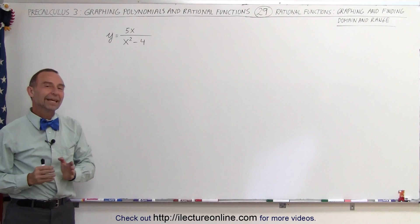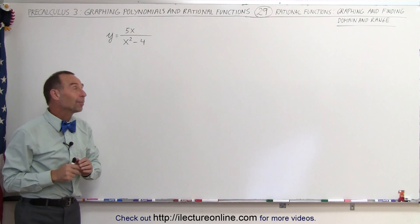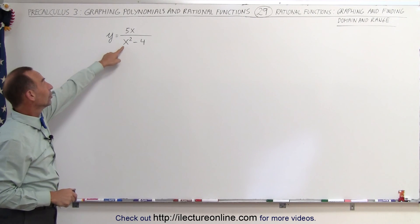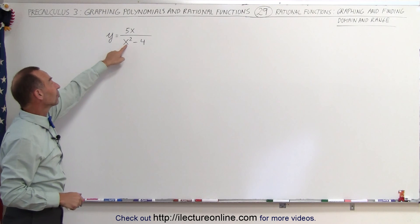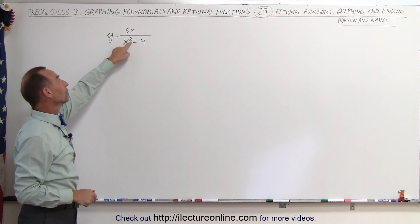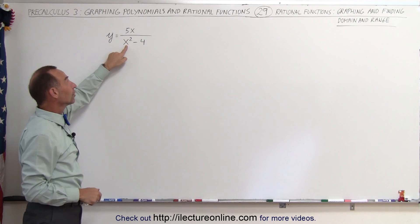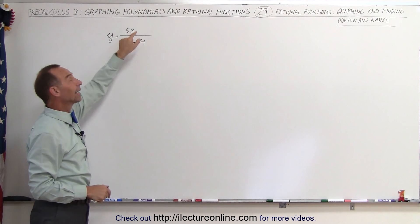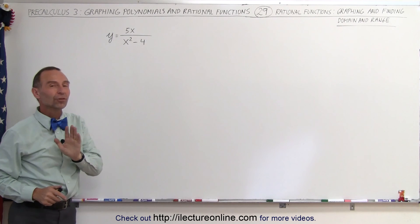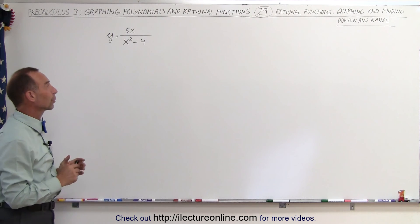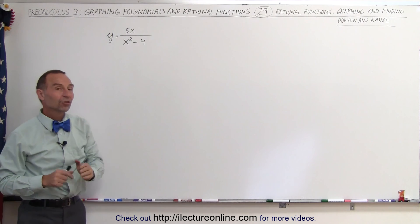Welcome to ElectronLine. In this example, notice that the denominator has a larger exponent than the numerator. We have x squared in the denominator and x in the numerator. So this one will look a little bit different when we try to work it out.